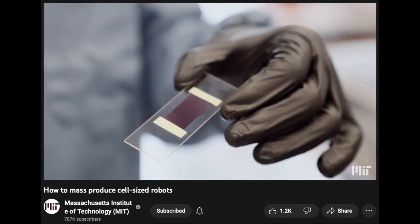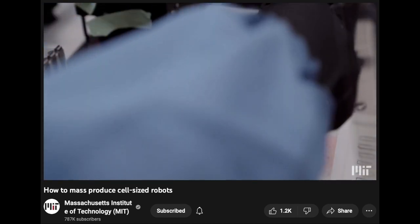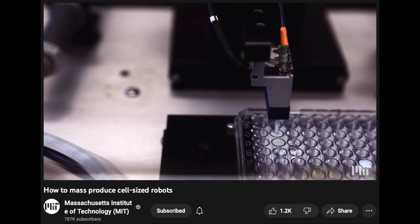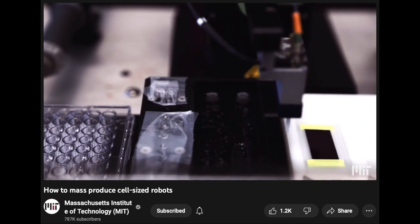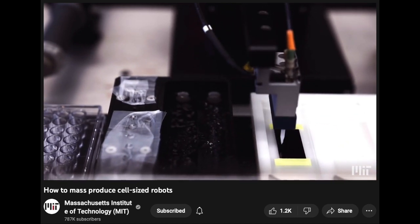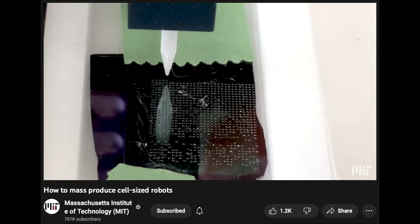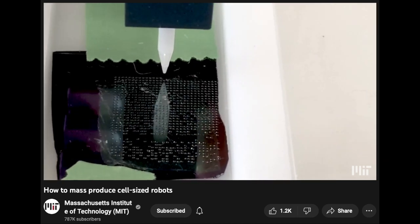To build these syncells, first a layer of graphene is laid down on a surface. Then, tiny dots of a polymer material containing the electronics for the devices are deposited by a microarray printer. Then, a second layer of graphene is laid on top.